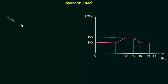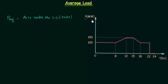P_AVG is the representation of average load and it is equal to the area under the load curve in kilowatt hours — or if power is given in megawatts, then it will be megawatt hours — divided by the total time. The unit of time is hours, and the total time is equal to 24 hours in this case.